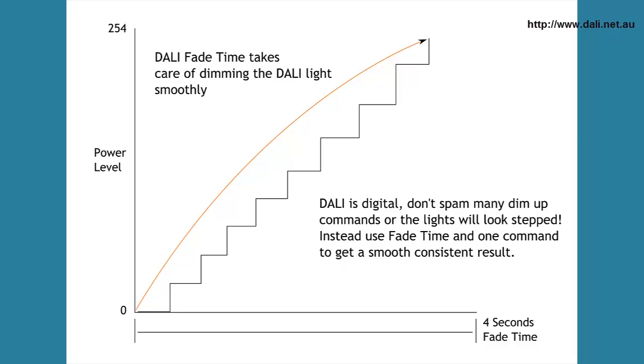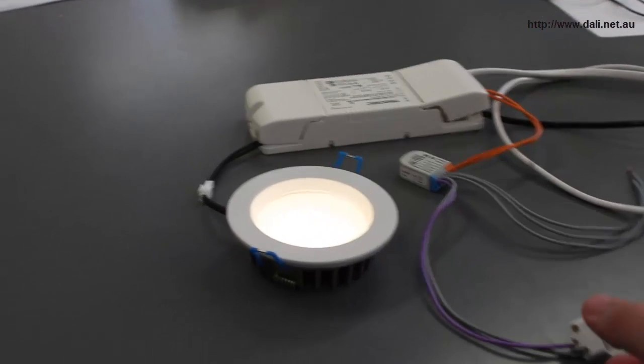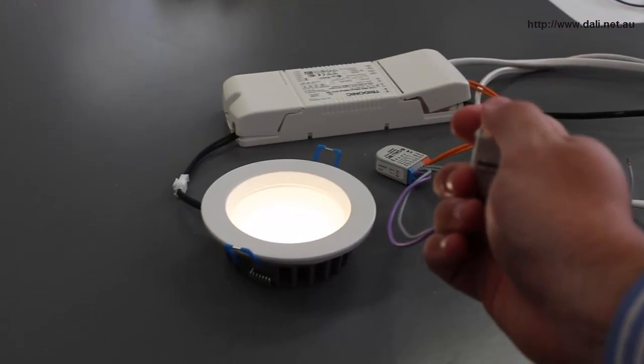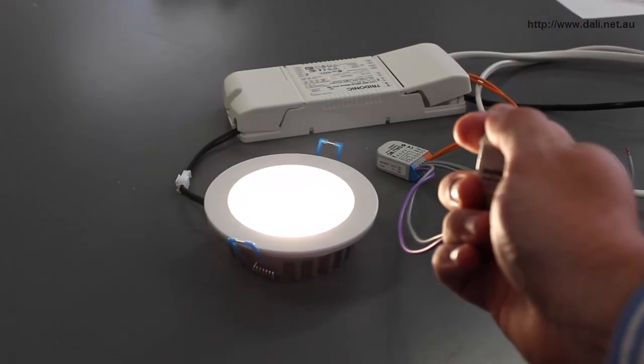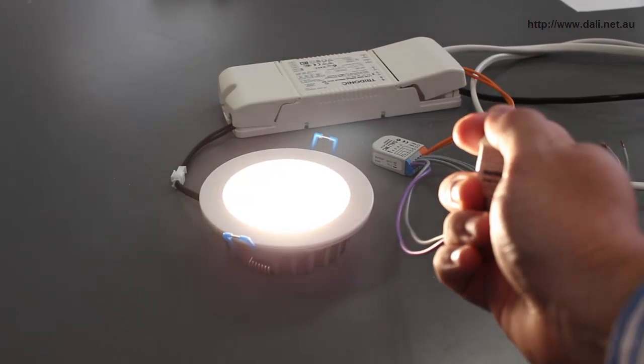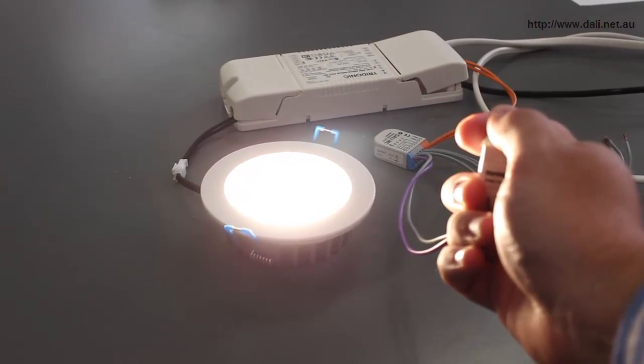Last week we spoke about Fade Time and how that creates a smooth curve when lights are turned on and off. When we use manual switch we want to dim the lights up or down. In this circumstance we can use Fade Rate to smoothly dim the lights at a set speed without showing any visible flickering or visible steps.